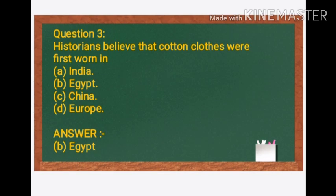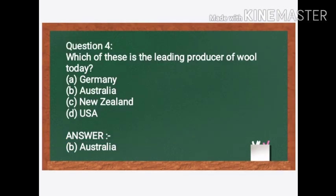Next: Historians believe that cotton clothes were first worn in — A. India, B. Egypt, C. China, D. Europe. The answer is B. Egypt. Cotton clothes were first worn in Egypt.